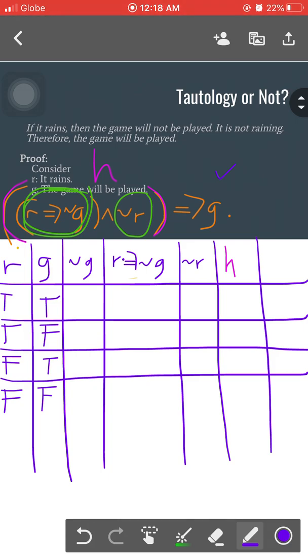That would become h, or hypothesis, the entire r implies not g and not r, implies the conclusion letter g. That's how you write column headings.